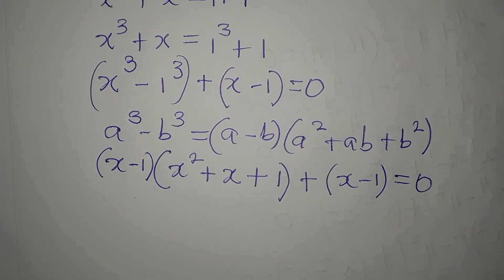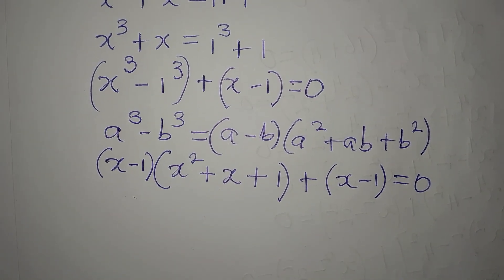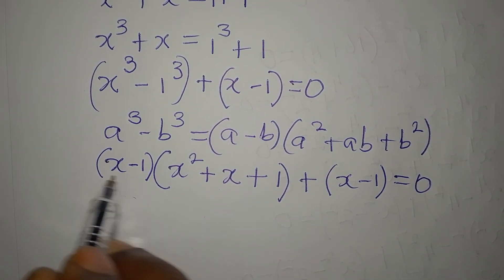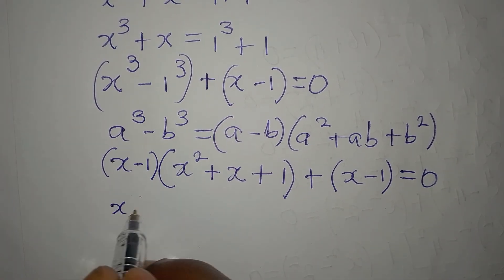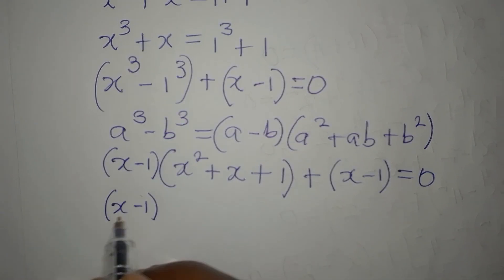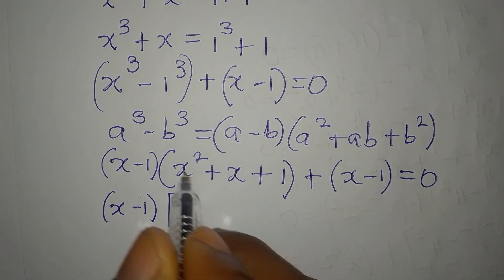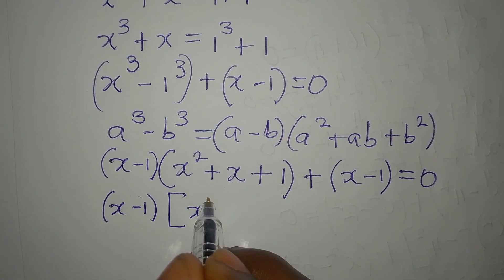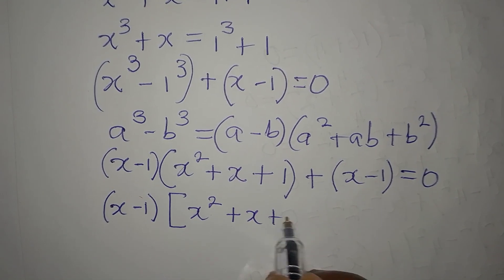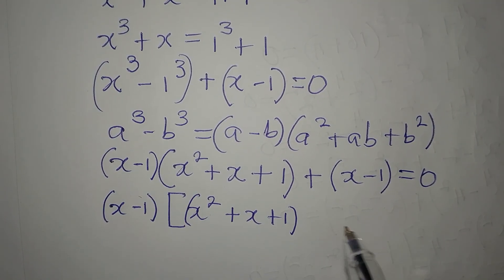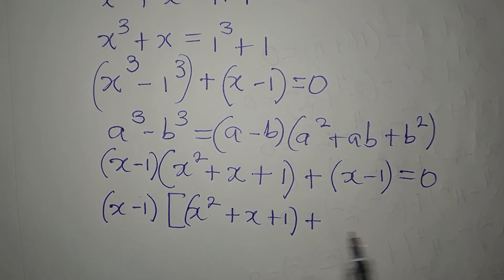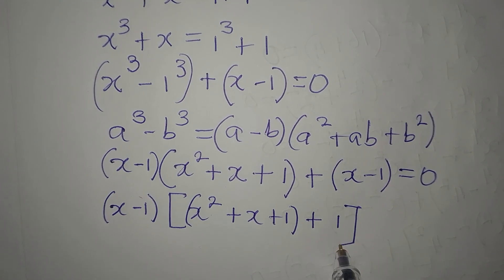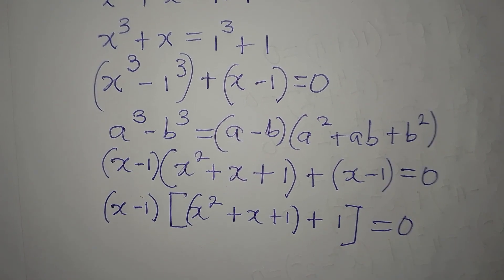Now, what do you think I can do? You look at this and this. x minus 1 is common, so x minus 1 comes out as the common factor. Then in here, we have x squared plus x plus 1, then plus 1 (x minus 1 divided by itself), close bracket, equals 0.